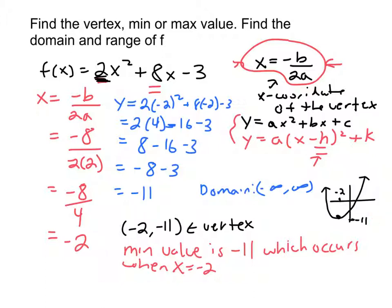So that means that when you're thinking about your range, your range, that would be that you would go from negative 11, and you include negative 11 because it does reach negative 11, and then it goes all the way up to infinity because it goes up from there.